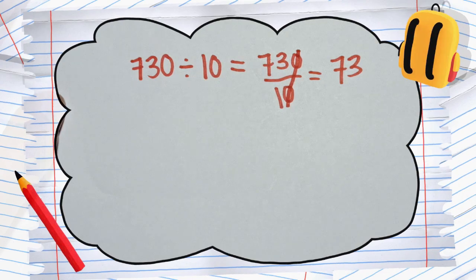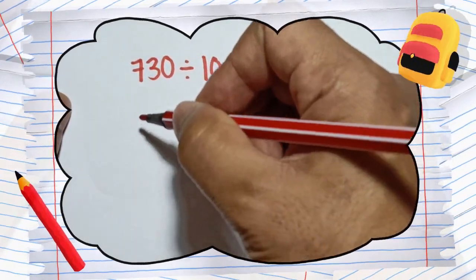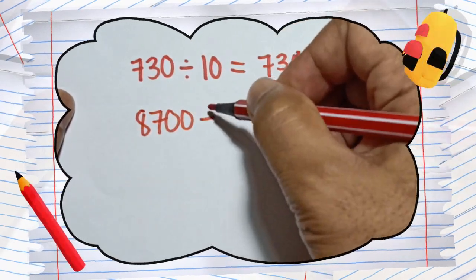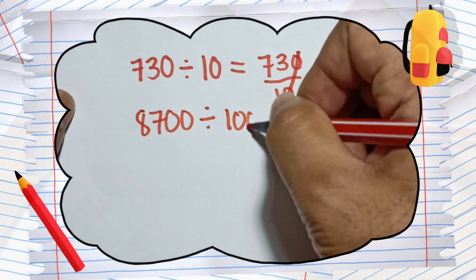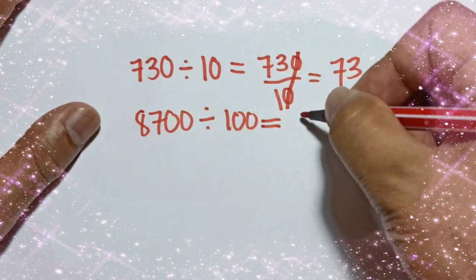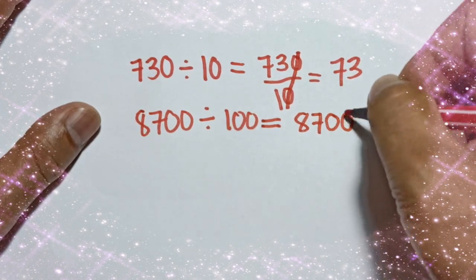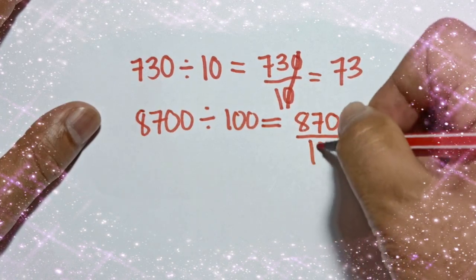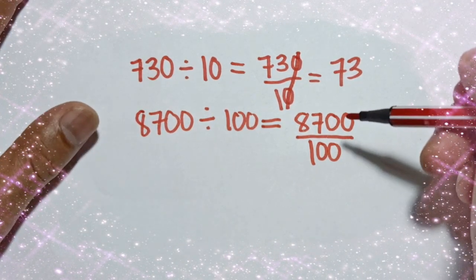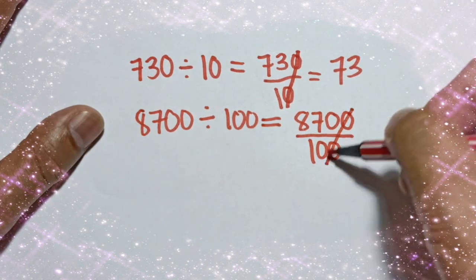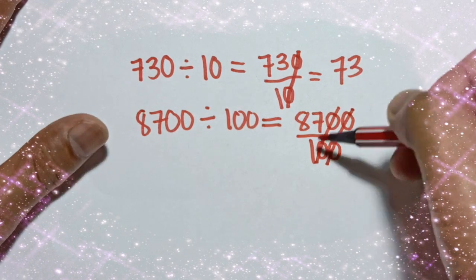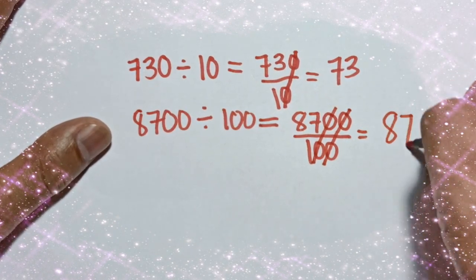Similarly, if you are dividing a number by 100 — for example, 8,700 divided by 100 — this can be rewritten as 8,700 over 100. They are in different form but have the same meaning. So you cut one zero and then cut another zero, and the remaining is 87 on top and 1 on the bottom. 87 divided by 1 is 87.